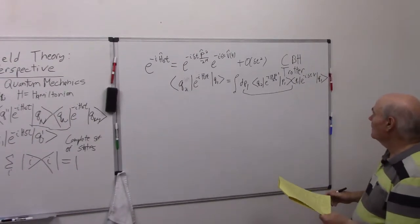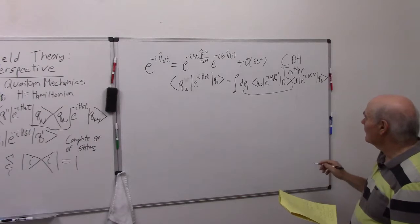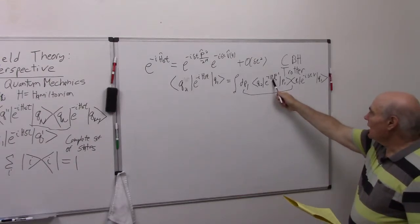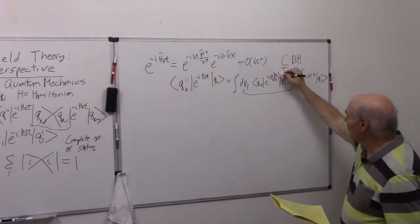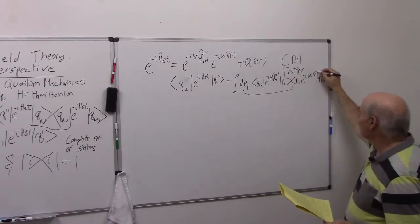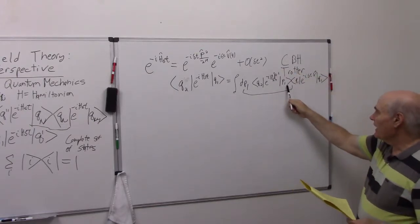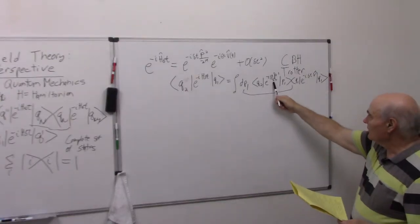Okay, so now you just have to remember, notice how nice this works out. Because this operator acting on a momentum eigenstate p1 is just going to give me the number. And likewise, this operator acting on q1 is just going to give me the number.